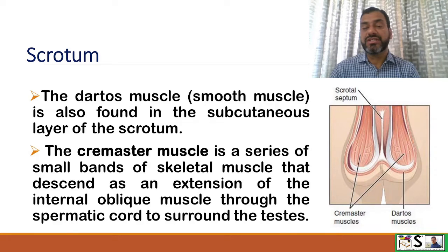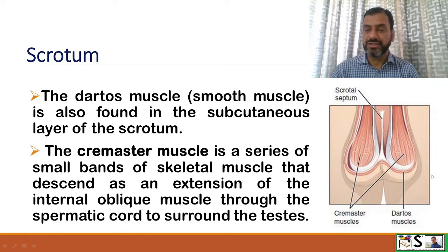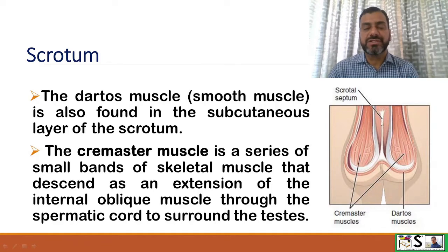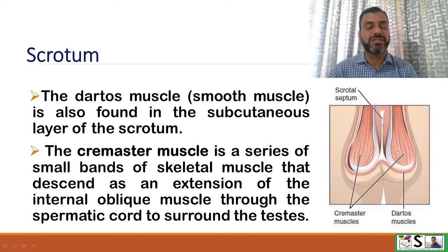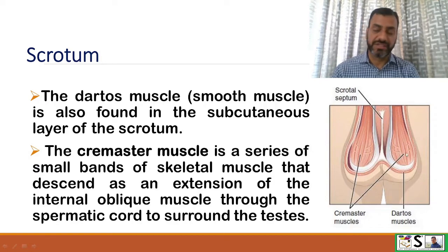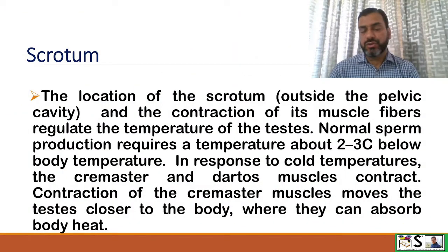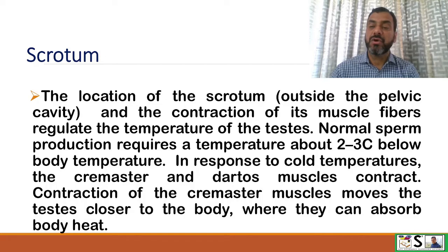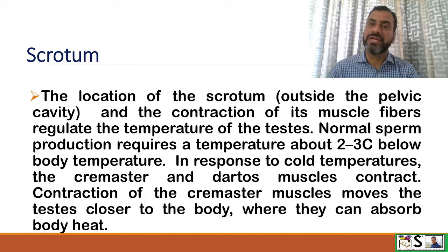The dartos muscle, which is a type of smooth muscle, is found in the subcutaneous layer of the scrotum. The cremaster muscle is a series of small bands of skeletal muscle that descend as an extension of the internal oblique muscle through the spermatic cord and surround the testes. The location of the scrotum — lying outside the body or pelvic cavity — and the muscular action of the dartos and cremaster muscles help to regulate the temperature of the testes.